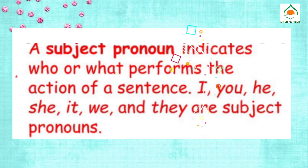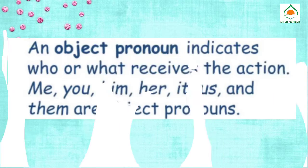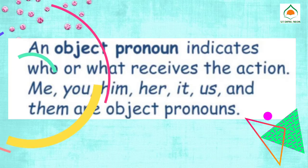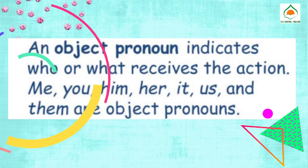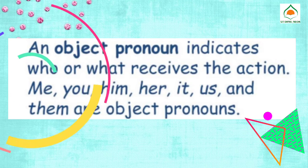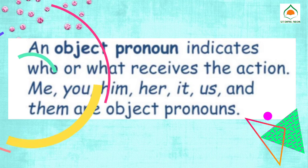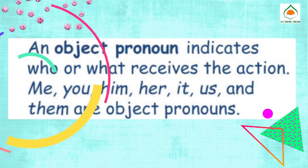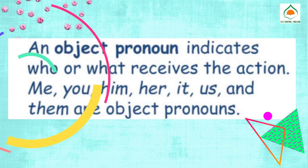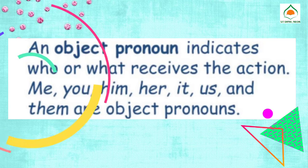we, and they. The following are object pronouns. An object pronoun indicates who or what receives the action. Those are: me, you, him, her, it, us, and them.